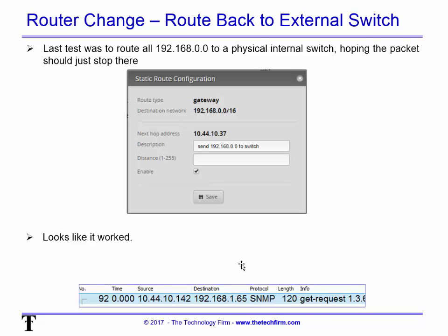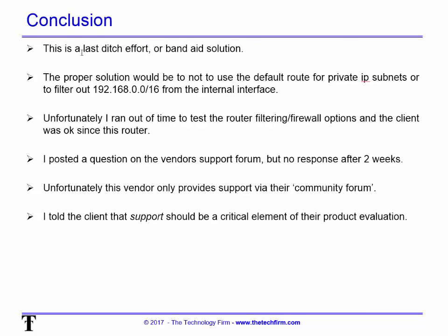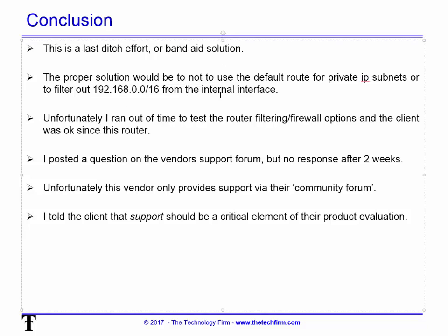Everyone watching will say we didn't fix anything — we just moved the problem. And that's fair; it is a bandaid solution. The proper fix would be not to use a default route for private IP subnets, or to filter out 192.168.0.0 on the internal interface. Unfortunately we ran out of time to test the router's filtering and firewall options. If I get a chance in a few months I'll revisit it and show whether there's a proper option to fix it.